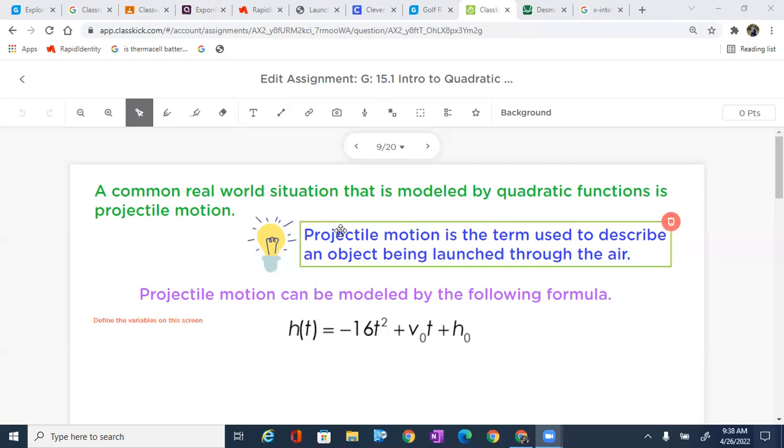Okay, and this projectile motion can simply be modeled by the formula H of T equals negative 16T squared plus v₀T plus h₀. We're going to get into all that in just a second, but let's go ahead and take a peek back at the golf ball.